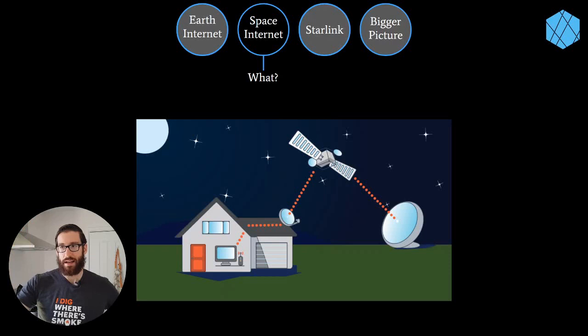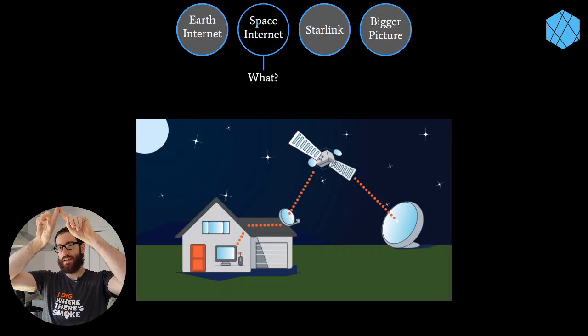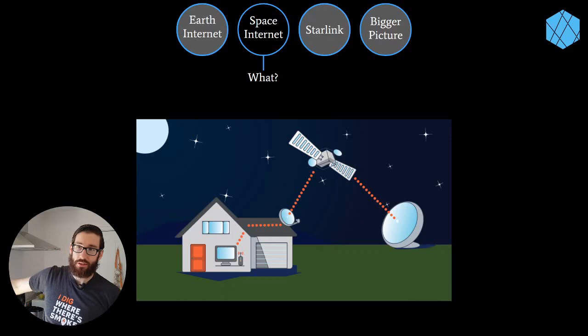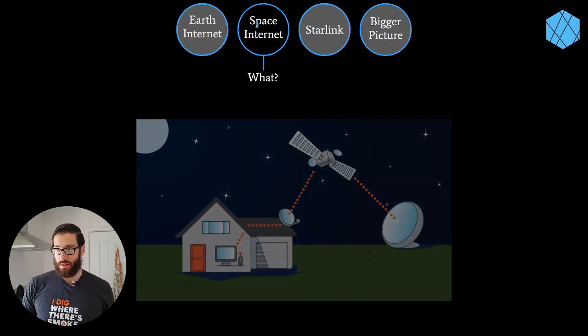Space-based internet is pretty simple - there are three pieces: a satellite in space, a ground station which is like a massive antenna, and your antenna on your roof. When you go to Netflix and search a show, you send that request to the satellite, the satellite pings it to the ground station, which runs it through cables to Netflix's servers. Netflix sends it back to the ground station, back to the satellite, back to your antenna and computer. It's basically extending the reach of cables through satellites.